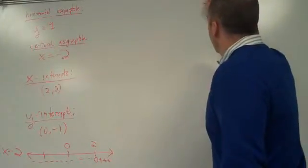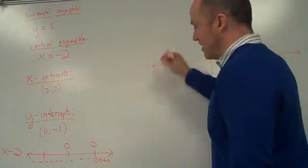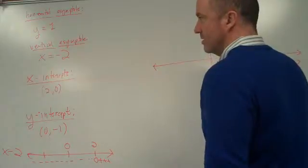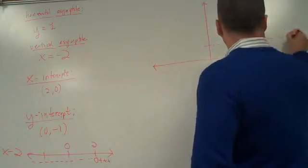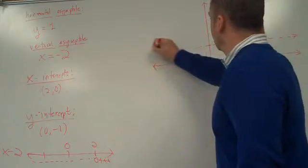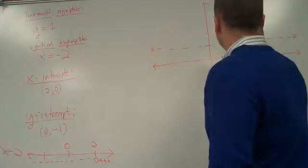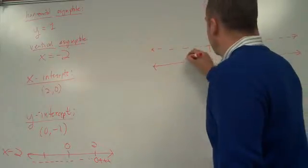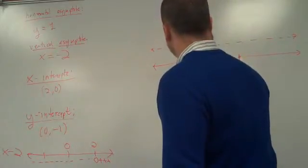I've got enough information to graph it now. I'm going to start with my asymptotes. y equals positive 1 was an asymptote. y equals negative 1 was my intercept. x-intercept at positive 2.